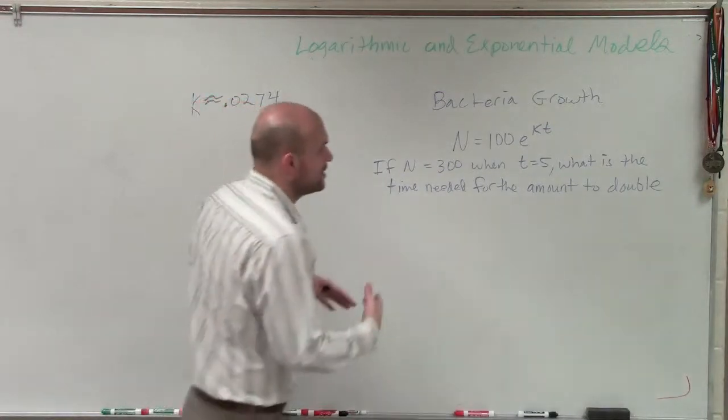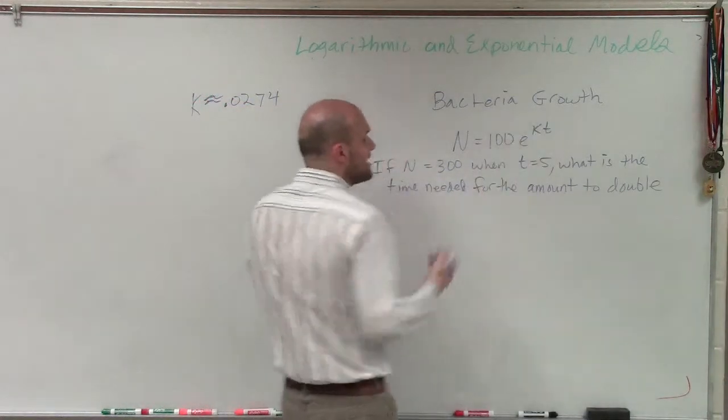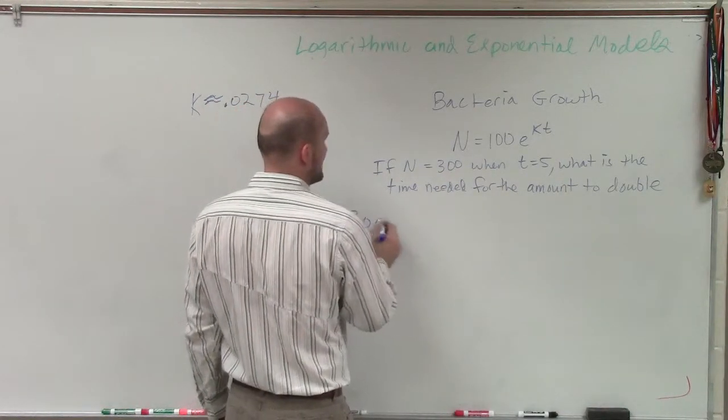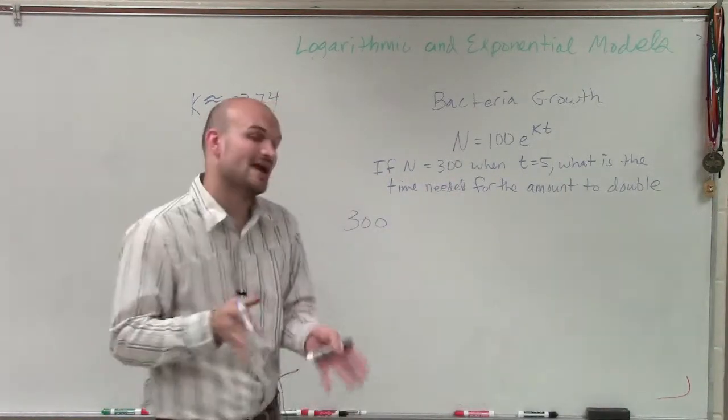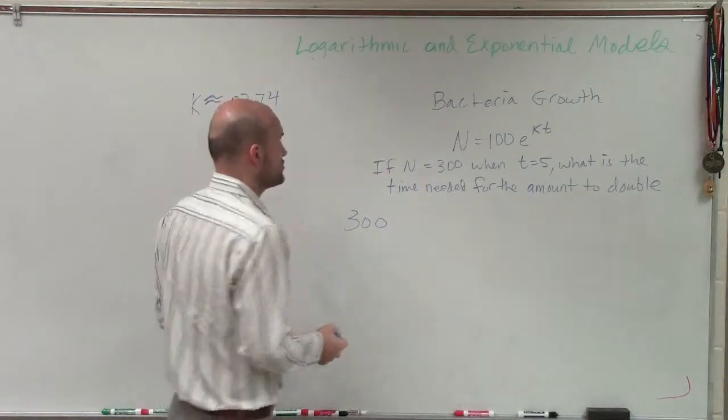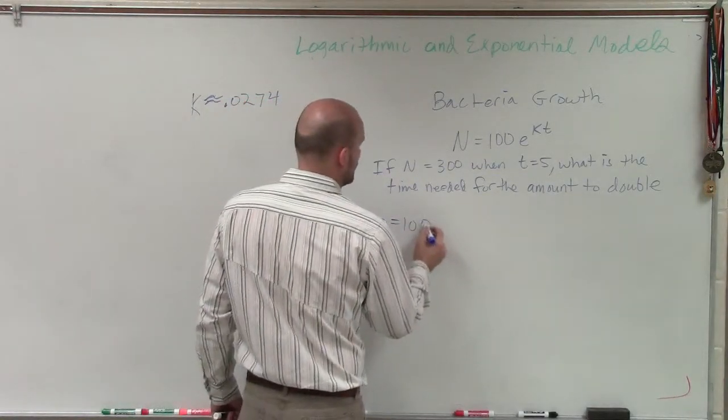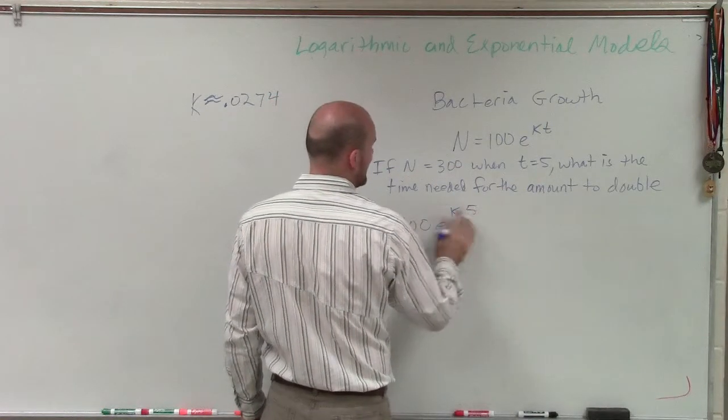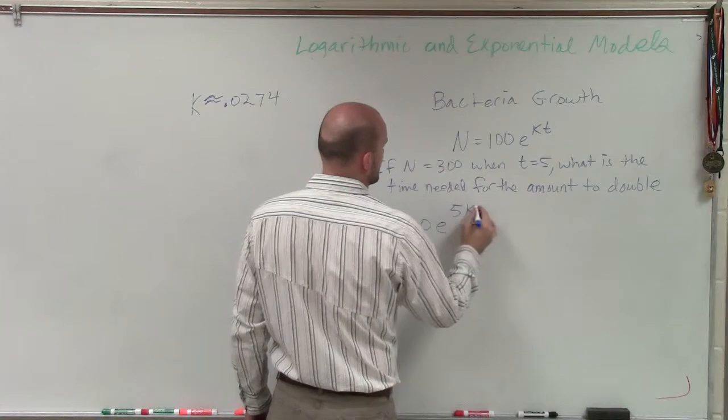Now, before we can just say what is the amount to double, we don't know how fast this bacteria is growing. So what we're going to do is we're going to first try to determine our k. And k is going to be the rate at which our bacteria is going to grow. So I have 300 equals 100e to the kt, where t would be 5. And I can just write this as 5k.